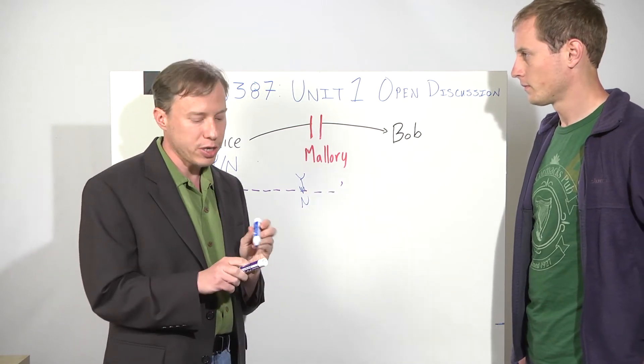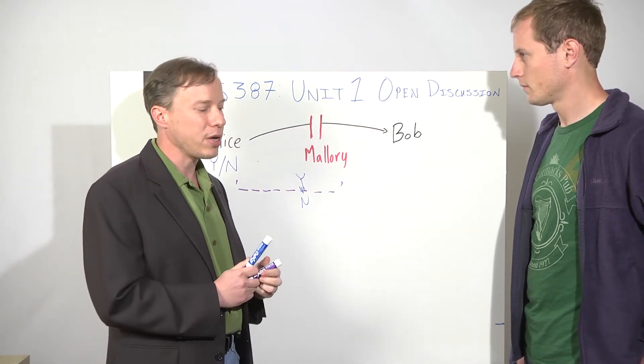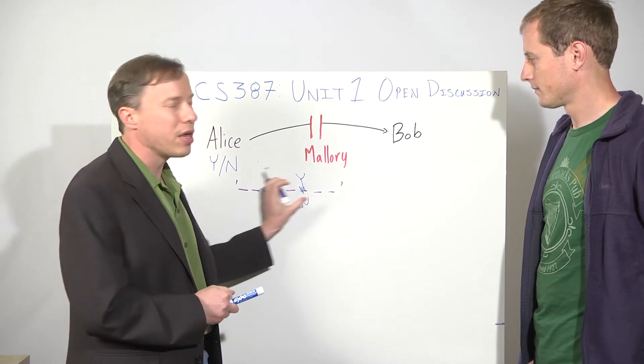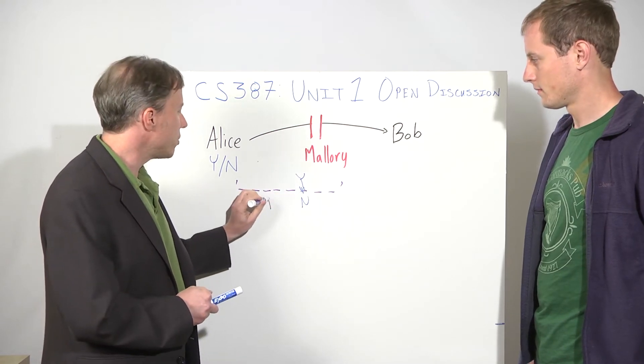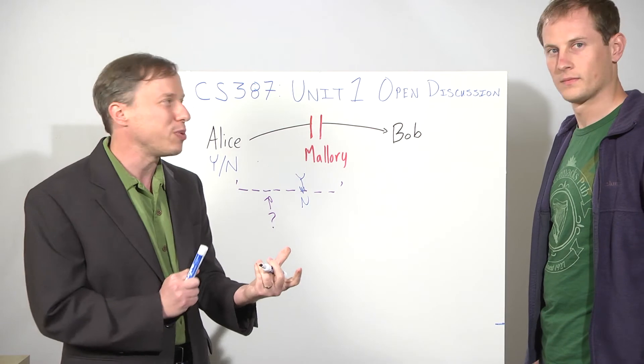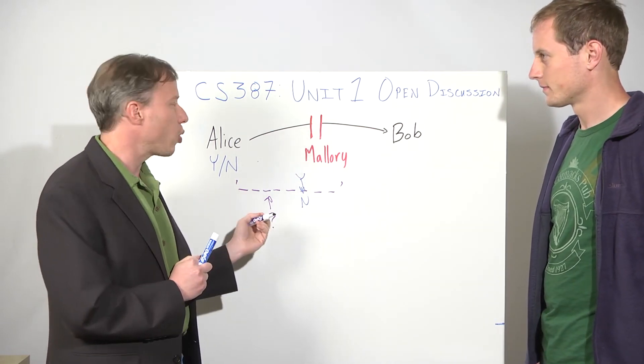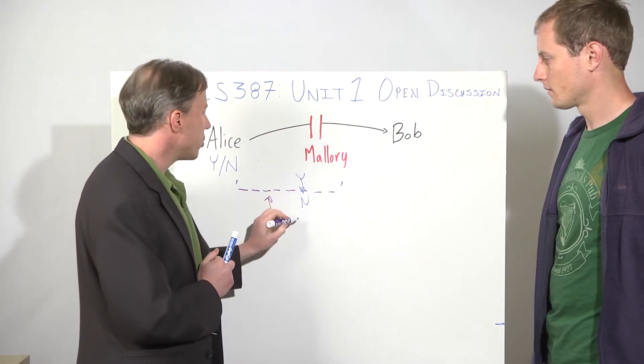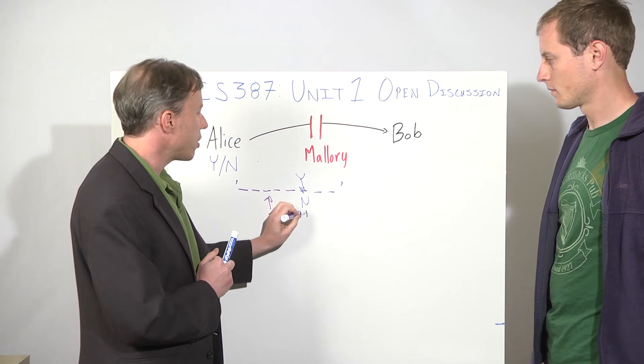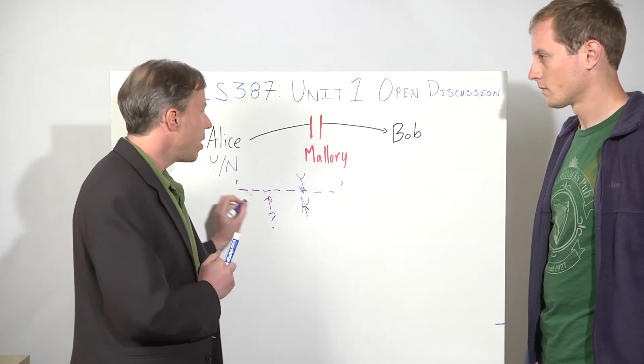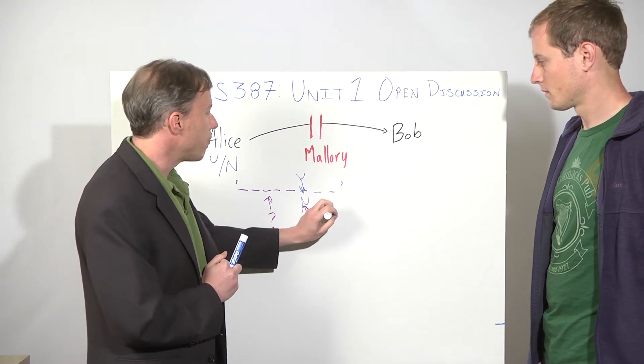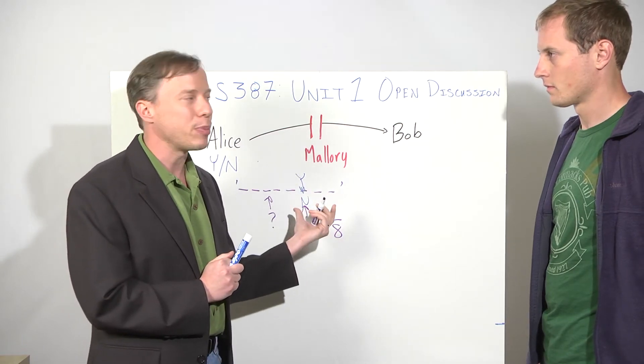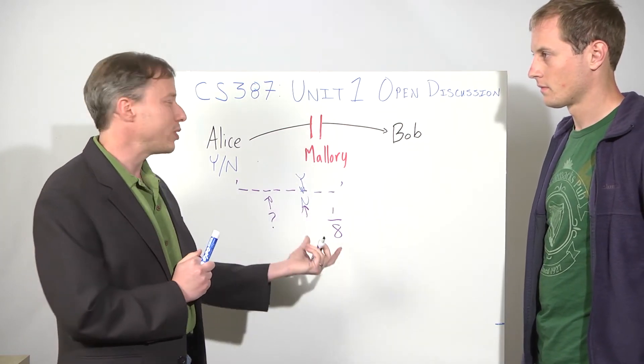And now this means when Mallory intercepts it, if she doesn't know which one was randomly picked, she can XOR out the difference between a Y or N from any one of these eight. But if she picks the wrong one, she's going to change a dash into something else. And so when Bob looks at the result, it's going to look wrong. Bob will know the message was tampered with. It's only if Mallory was lucky enough to guess the right one to flip that she could change the answer.